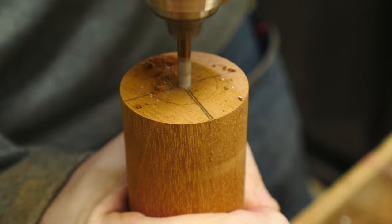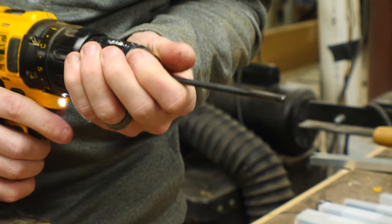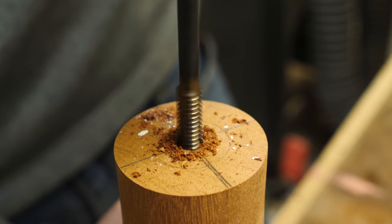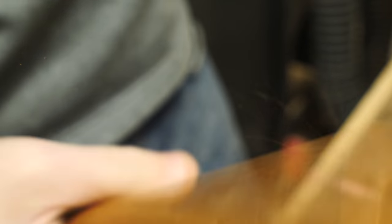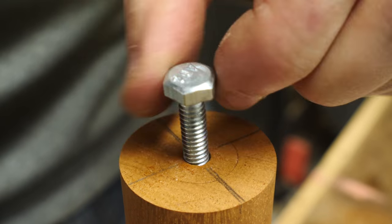Then I drilled out the bottom of my handles with a little bit smaller bit, and used a wood tap to add some threads inside the handles. This makes it so that the quarter-twenty bolts go right in and hold securely.